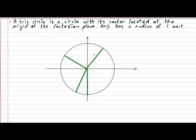The fact that the trig circle always has a radius of one unit also has an important implication on the x and y intercepts of the circle. The implication is that the circle will intersect both axes at the following locations: (1, 0), (0, 1), (-1, 0), and (0, -1).